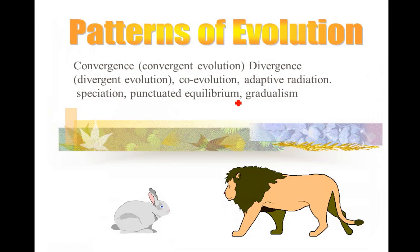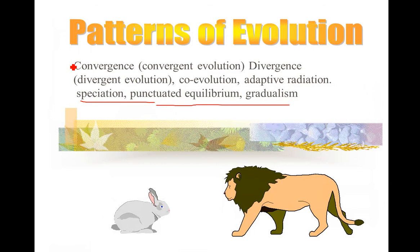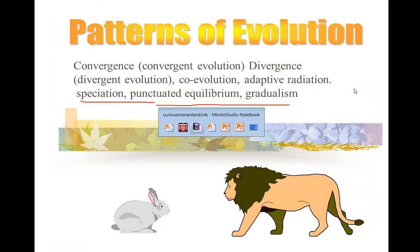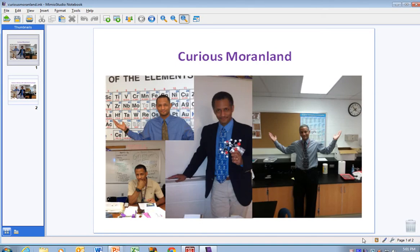This concludes the video. I'm going to do a separate video on speciation, punctuated equilibrium, and gradualism. In this video, you should have seen explanations of convergence, divergence, and adaptive radiation. Thanks for watching.